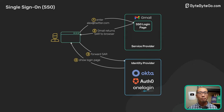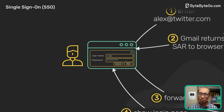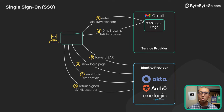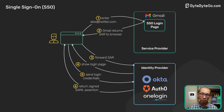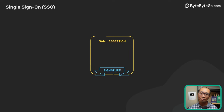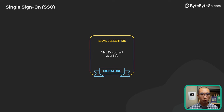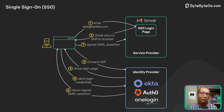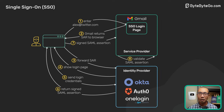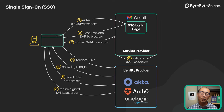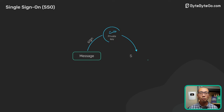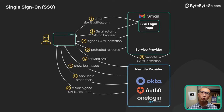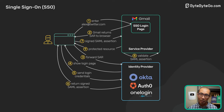The identity provider shows the login page where the user enters their credentials. Once the user is authenticated, the identity provider generates a SAML response and returns it to the browser. This is called a SAML assertion — a cryptographically signed XML document that contains information about the user and what the user can access with the service provider. The browser forwards the signed SAML assertion to the service provider, which then validates that the assertion was signed by the identity provider, usually using public key cryptography.